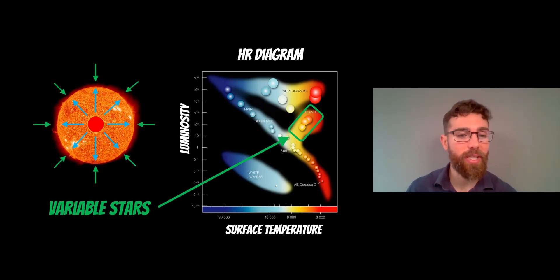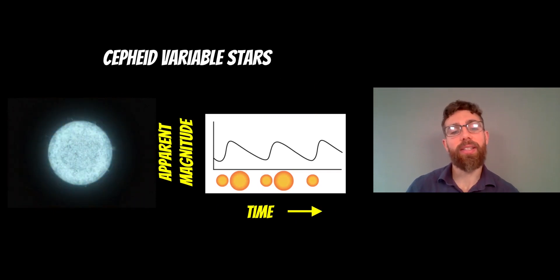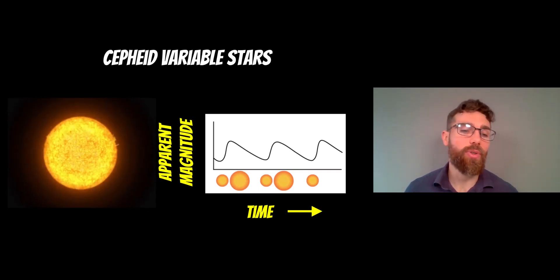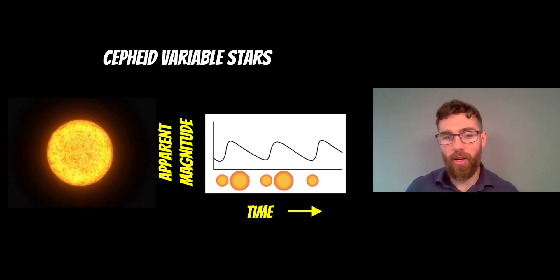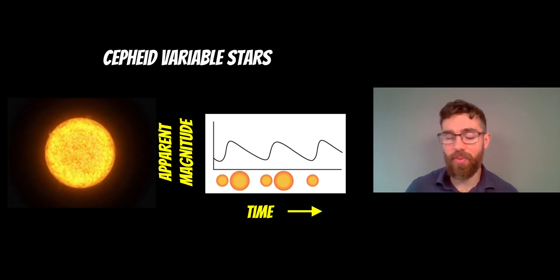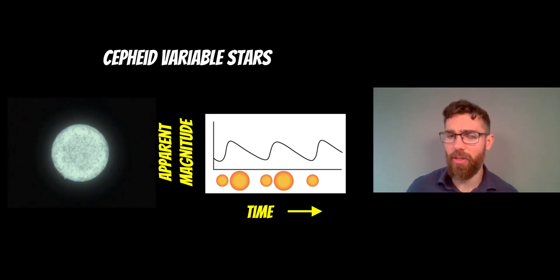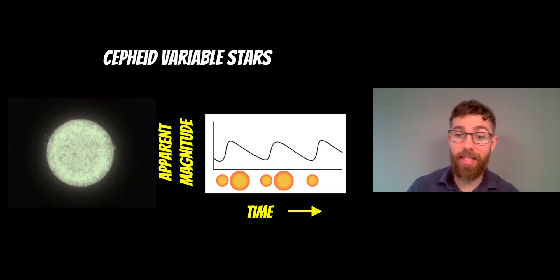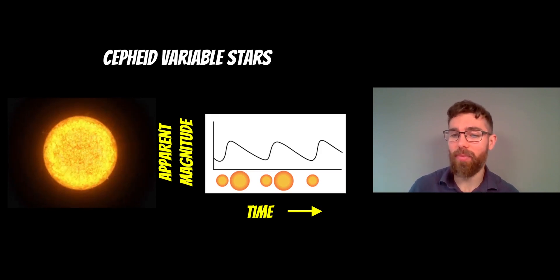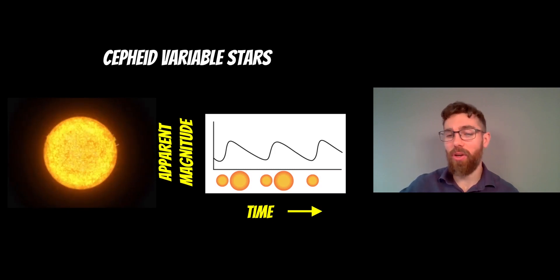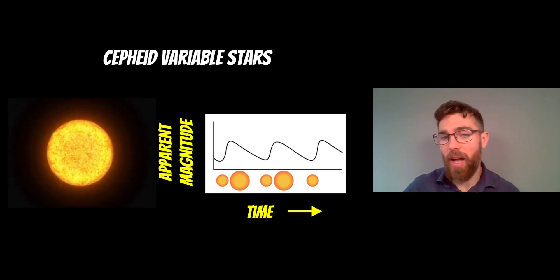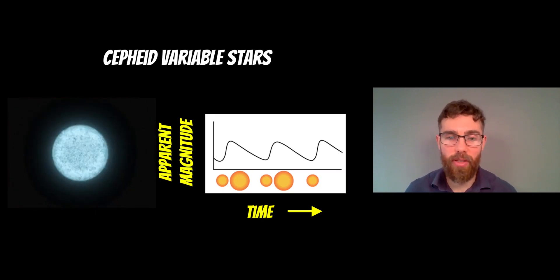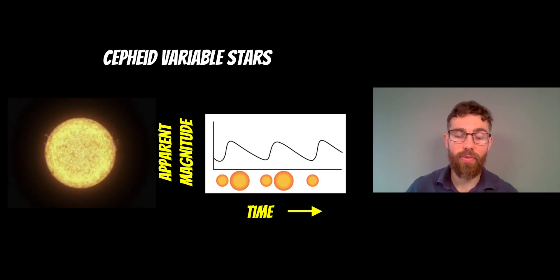So Cepheid variables are the ones we're interested in for this. And they may do something like this. So they actually kind of pulsate or they change their brightness. So they get bigger, smaller. As a result of that, their surface temperature changes and their brightness will change. So their apparent magnitude, as we observe them, will fluctuate. And it typically has a very regular pattern. So on the right, you can see here over time, as the star kind of pulsates or varies, we get this change in apparent magnitude. And it's quite a regular period for these particular stars. It's a very useful thing.